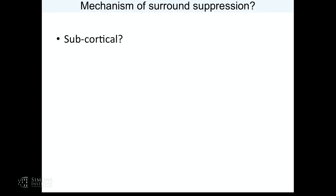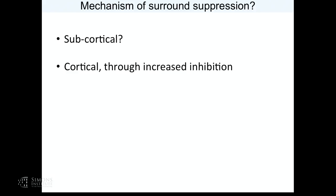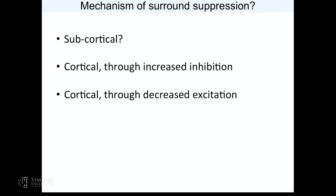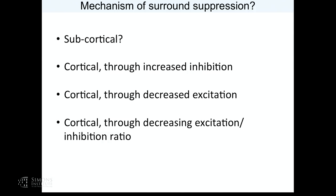Is it subcortical? A lot of the features of surround suppression don't suggest this — like its orientation dependence, and the fact that it's delayed in time. So if it's cortical, is it through increased inhibition? The initial hypothesis was yes — maybe the simplest model is that you increase activity of an inhibitory neuron, increase GABA onto pyramidal cells, and therefore divide their firing rates. But an alternative hypothesis, equally perhaps as simple, is that you simply remove excitation — or, not to the exclusion of either, it's a change in the ratio of excitation to inhibition.